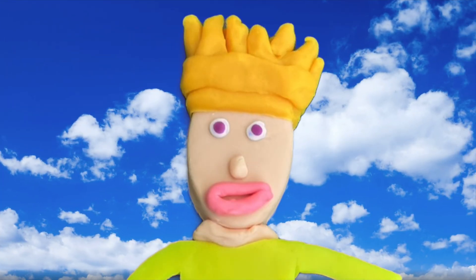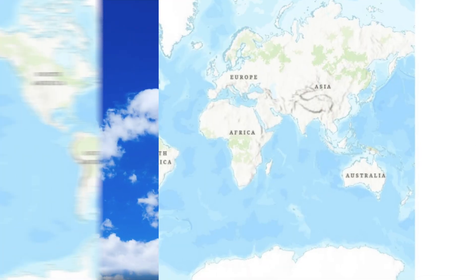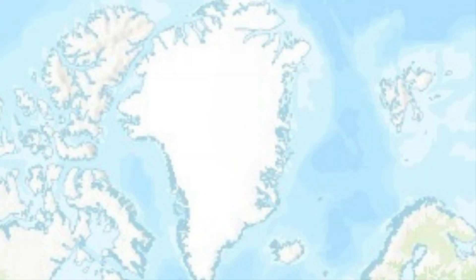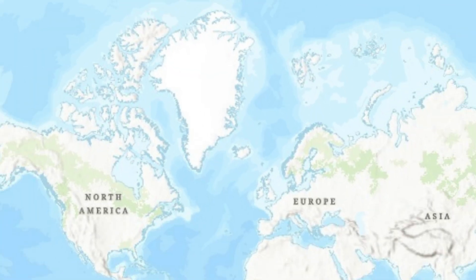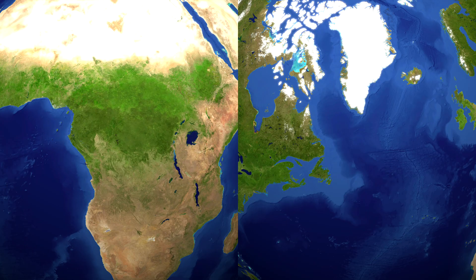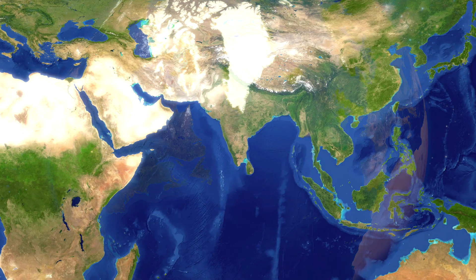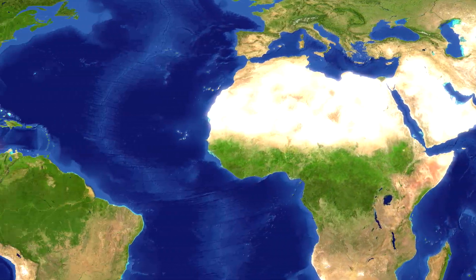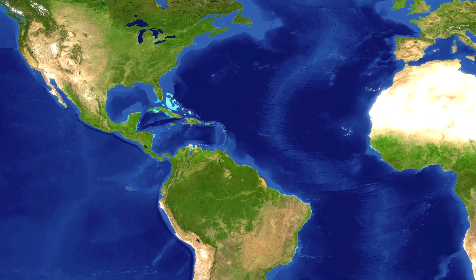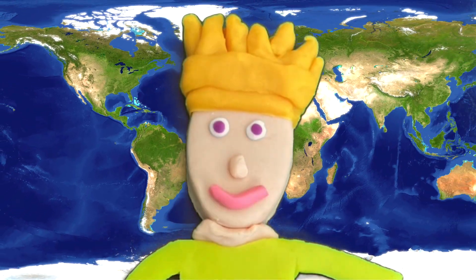There are other examples too. Let's take a look at the continent of Africa and the country of Greenland. On this map, Greenland almost looks as big as Africa, right? But on the globe, it's tiny in comparison. That's because when we flattened out the globe, everything near the poles got stretched out, just like Antarctica.